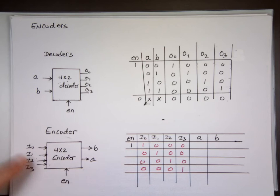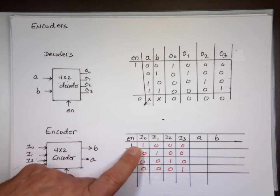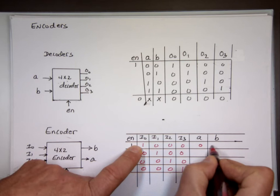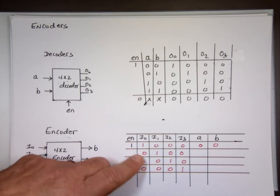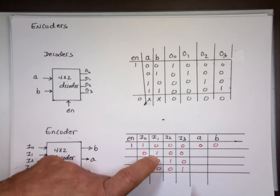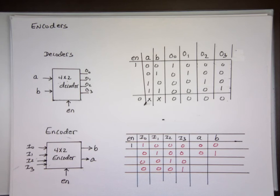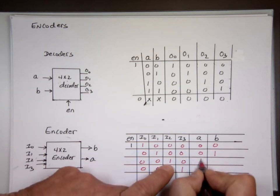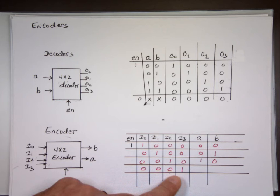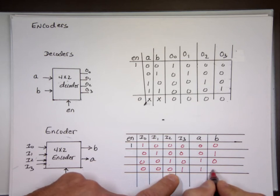When input 0 is on, what's the binary equivalent of 0? That's 0,0 — so you get 0,0 out. It's reversed. When input 1 is on, you get 0,1 out of A and B. When input 2 is on, you get 1,0. When input 3 is on, you get 1,1.